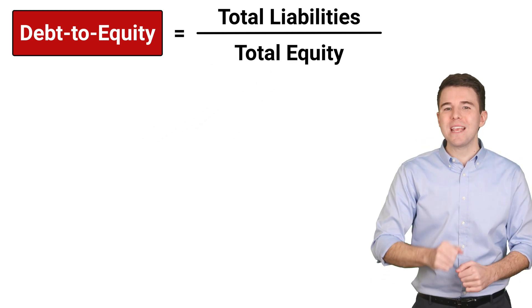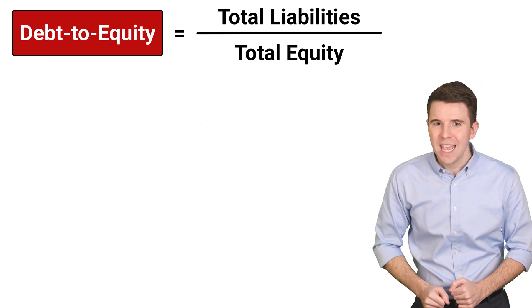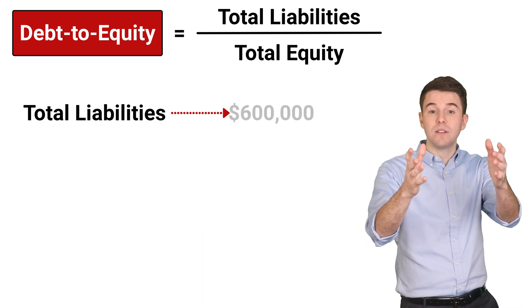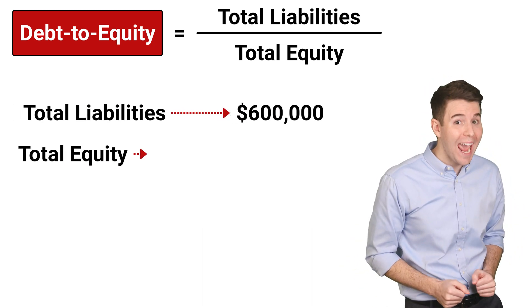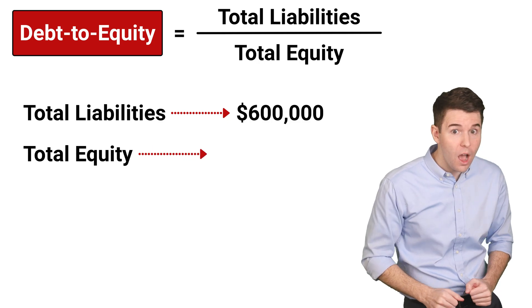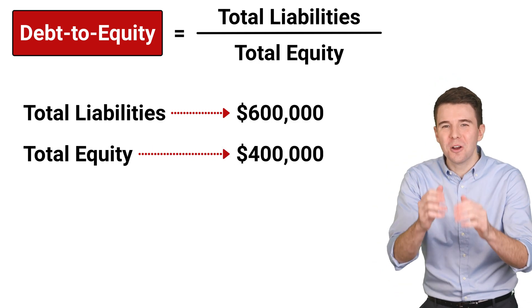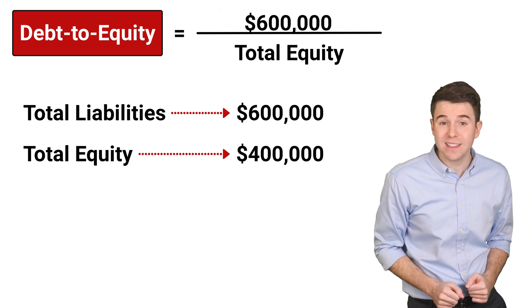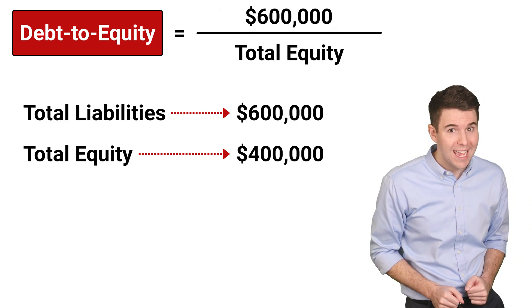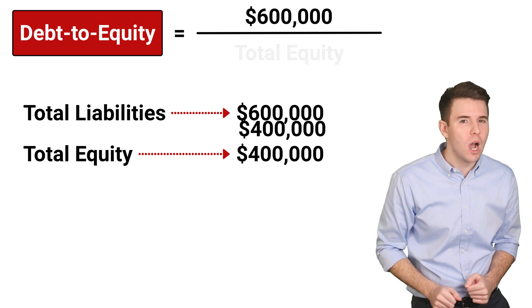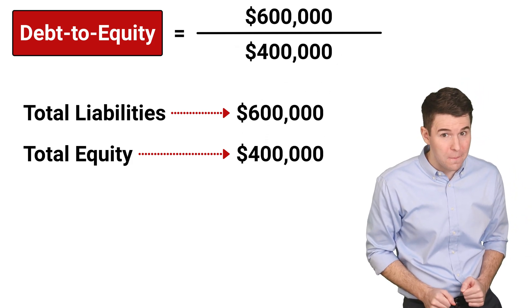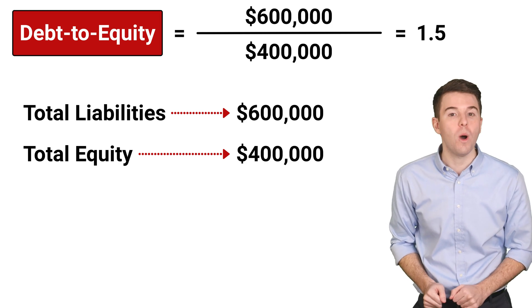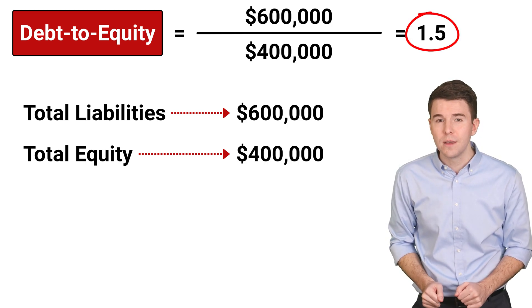Let's break this down with an example. Suppose a company has total liabilities of $600,000 and total equity of $400,000. To determine the Debt-to-Equity Ratio, we would take the $600,000 in liabilities and divide it by the $400,000 in equity. This results in a Debt-to-Equity Ratio of 1.5.